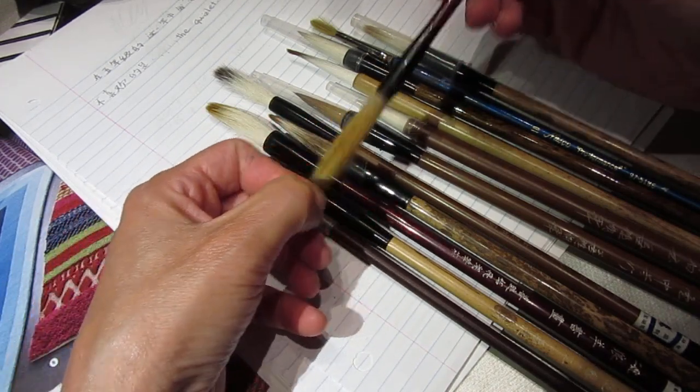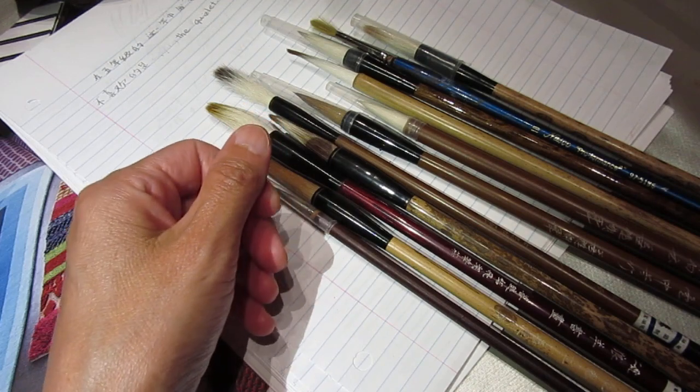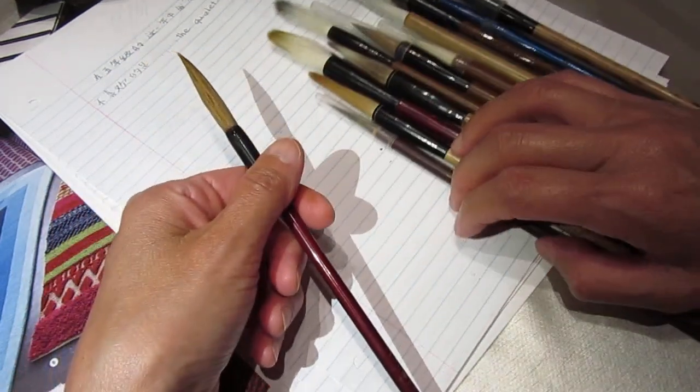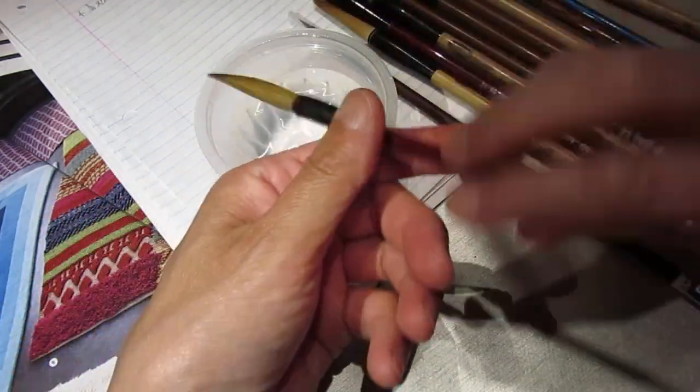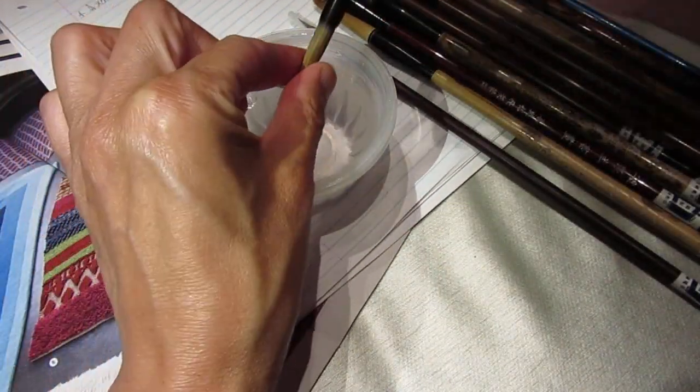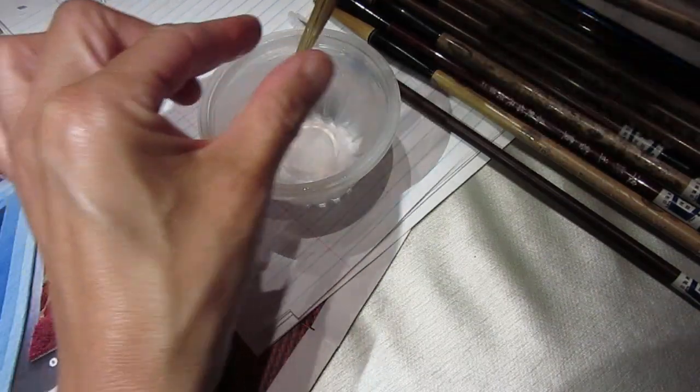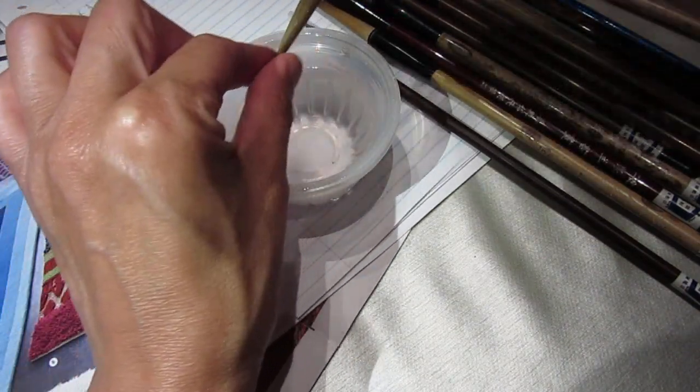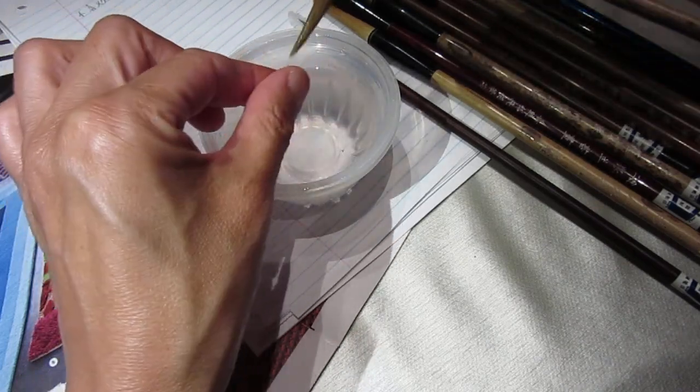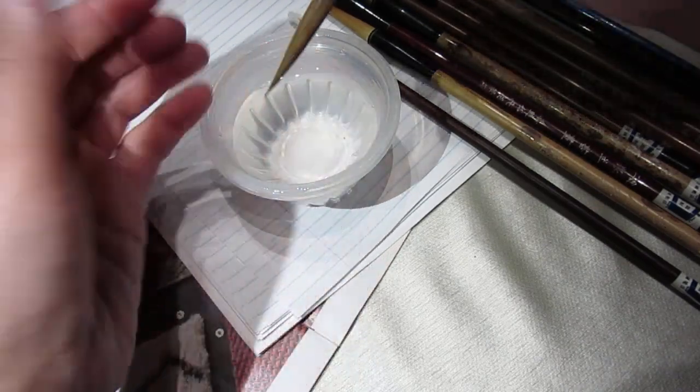Dip some water. Dip some water. It becomes such a beautiful slender shape, and just beautiful. All these brushes will become so thin and slender.